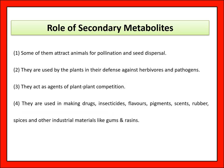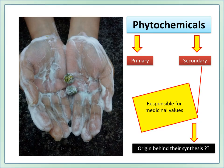The role of secondary metabolites: some attract animals for pollination and seed dispersal. They are used by plants in defense against herbivores and pathogens. They act as agents of plant-plant competition. They are used in making drugs, insecticides, flavors, pigments, rubber, spices, and other industrial materials like gum and resin.